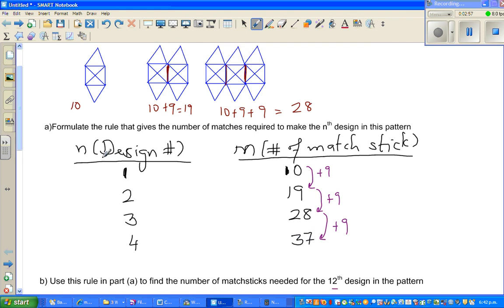Now we want to formulate the rule that gives the number of matchsticks, which is m, required for the nth design. So I want to find a relation, a rule between m and n. I look at the number and say this 10 is related with this 1 and 9. So what sort of relationship can you find between 1 and 10 and 9?